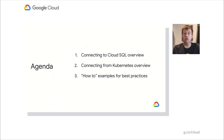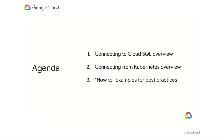We're going to have three main points. The first is we're going to cover how to connect to Cloud SQL in general. Then we're going to narrow down and talk about connecting from Kubernetes to Cloud SQL. And then finally, we're going to narrow down even more and do a hands-on example of the best practices for connecting to Kubernetes.